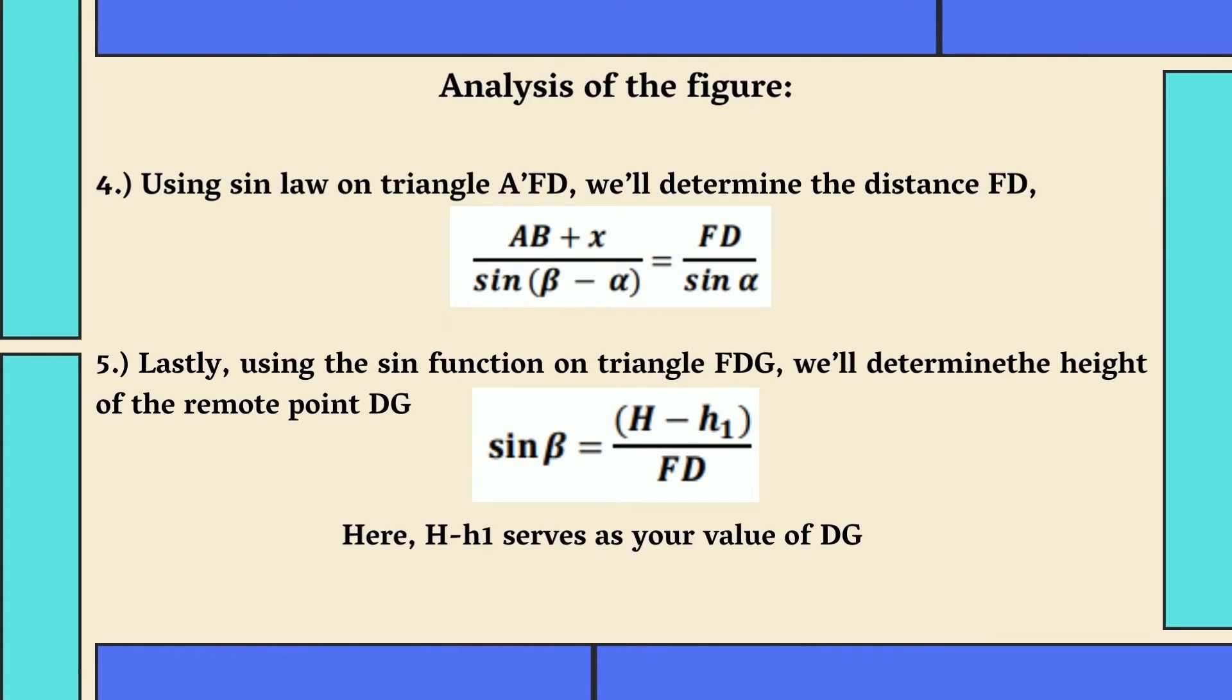Using sin law on triangle AFD will determine the distance of FD, which is AB plus X over sin multiplied to the difference of beta and alpha equals FD over sin alpha. Lastly, using the sin function on triangle FDG will determine the height of the remote point DG using the formula sin beta equals H minus H1 all over FD. Here, H minus H1 serves as your value of DG.